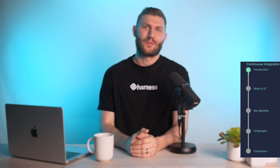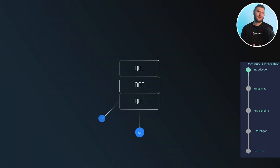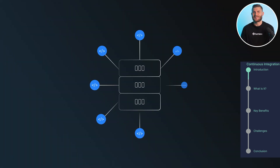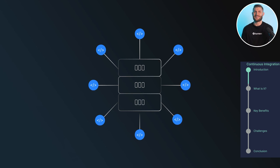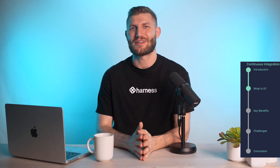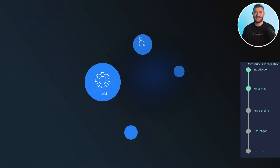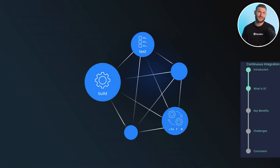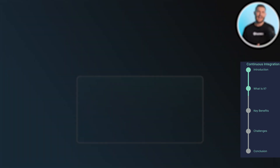In this video, we're delving into the world of continuous integration, a fundamental practice in modern software development that aims to streamline the process of integrating code changes from multiple developers into a shared repository. Continuous integration involves automating the build, test, and integration of code changes on a regular basis, and this ensures that conflicts are detected early and that the codebase remains stable.